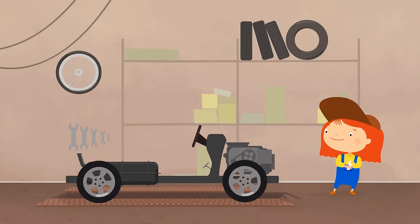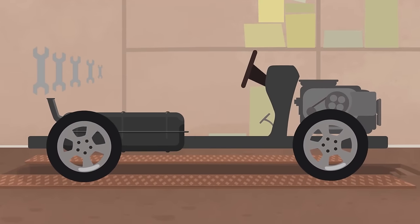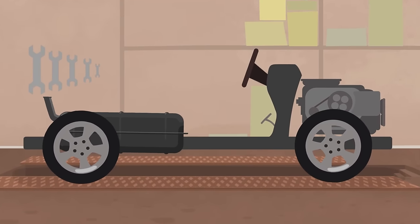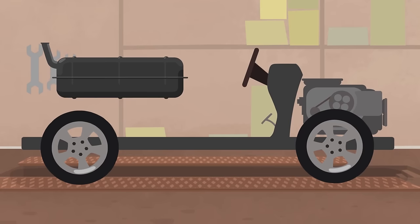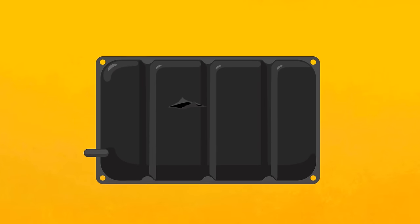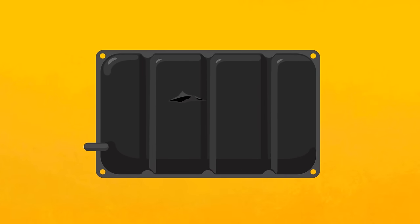Now let's take out the fuel tank and have a good look at it. There's the hole from the sharp stone. We need to cover it.